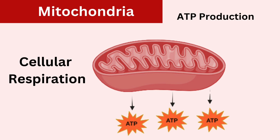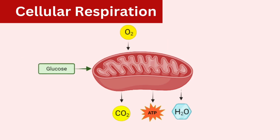Mitochondria generate ATP through a series of biochemical reactions collectively known as cellular respiration. This process involves the breakdown of molecules from food we take, such as glucose and other organic molecules, in the presence of oxygen, producing ATP as well as carbon dioxide and water as by-products.